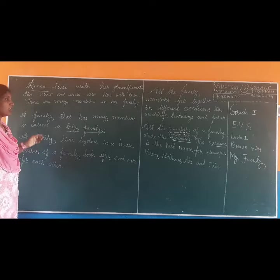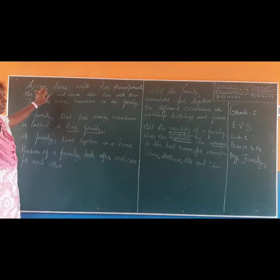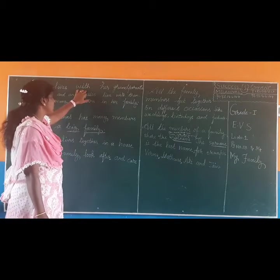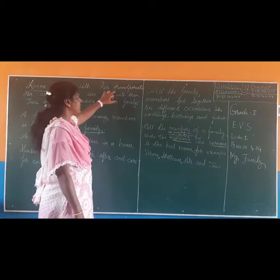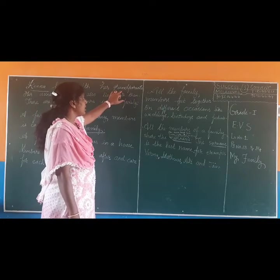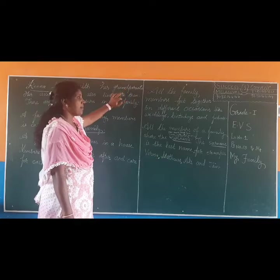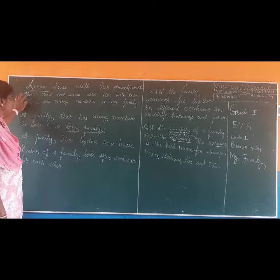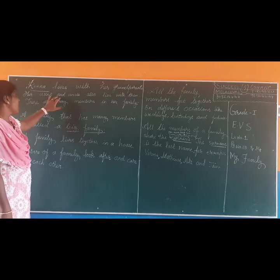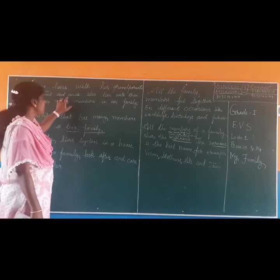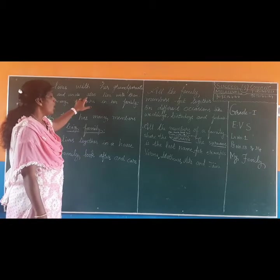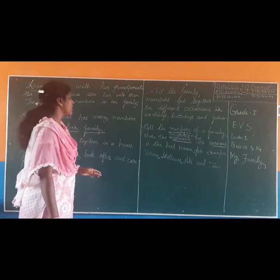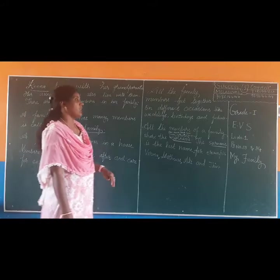Now I will read the spelling. Rina: R-E-E-N-A. Lives: L-I-V-E-S. With: W-I-T-H. Her: H-E-R. Grandparents: G-R-A-N-D-P-A-R-E-N-T-S. Her aunt: A-U-N-T. And uncle. Also: A-L-S-O. Live: L-I-V-E. With: W-I-T-H. Them: T-H-E-M.